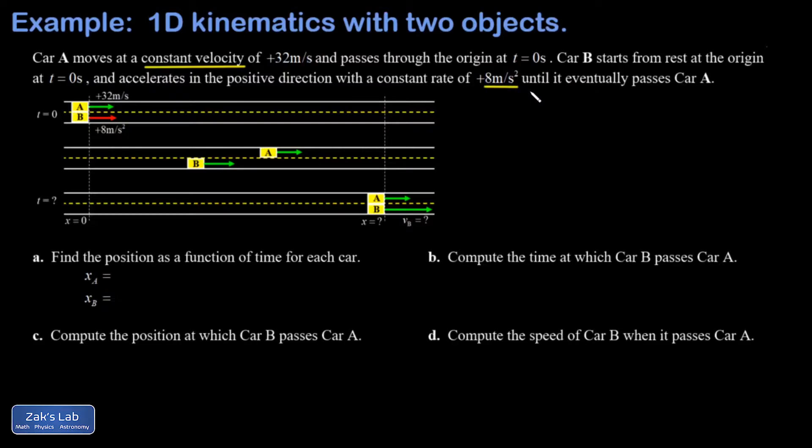So car B starts from rest, car A blows right by it, and then car B just speeds up and speeds up and eventually goes zooming past car A. We're trying to find the position where that occurs, the time where that occurs, and the speed of car B when it goes zooming past car A.